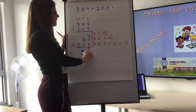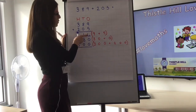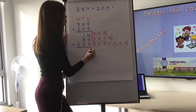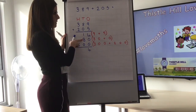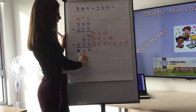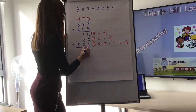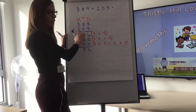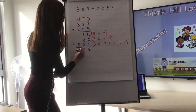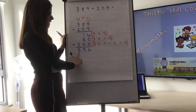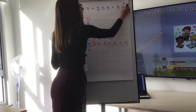Starting with the ones: four add zero add zero is four. In the tens: 10 add 80 is 90, so we place 90 in the tens column because 90 has nine tens. For the hundreds: 500 with nothing added stays 500. So our answer is 594.